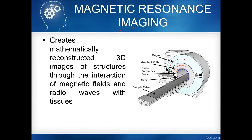Walang nakalagay na shim coil sa picture. Tandaan niyo guys, bago ang gradient coil, una ay magnet, pang-tatlo gradient coil, pang-apat RF coil. May pangalawa pa tayong coil — mayroon tayong tinatawag na shim coil.